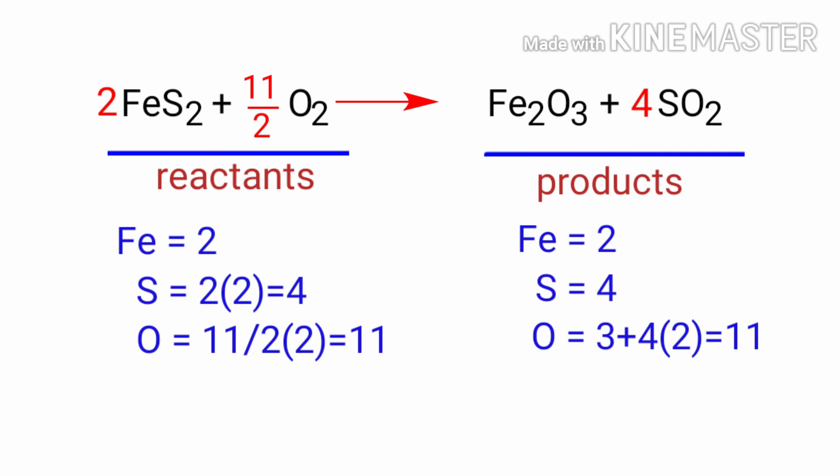In this equation, 11/2 is a rational number. We don't use rational numbers for molecules. So to get whole numbers, we need to multiply the equation by a coefficient of 2.